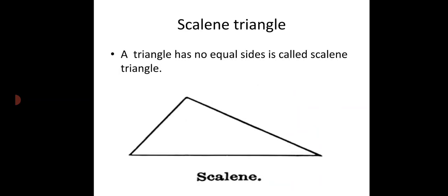Scalene Triangle: here is a picture drawn in front of you — see it has two sides equal, so which triangle is it? Isosceles. A scalene triangle has no equal sides; it is called a scalene triangle. Which triangle has no equal sides? We call it a scalene triangle.